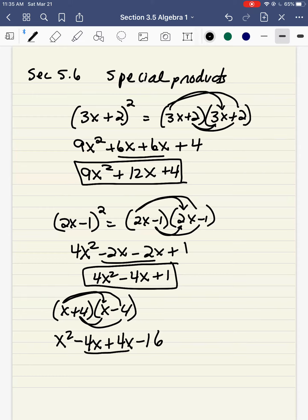Notice the middle terms are going to drop out here. So I have x squared. Minus 4x plus 4x is nothing. So it's just x squared minus 16.